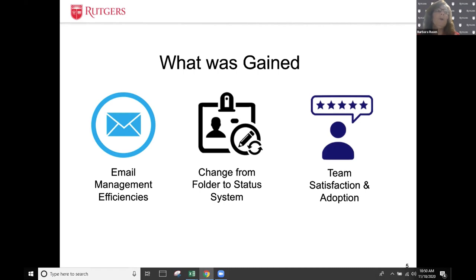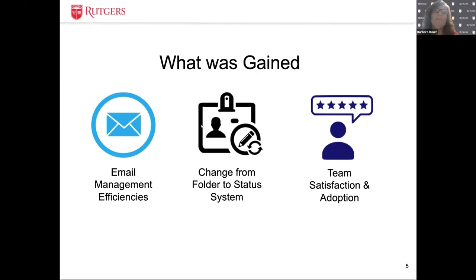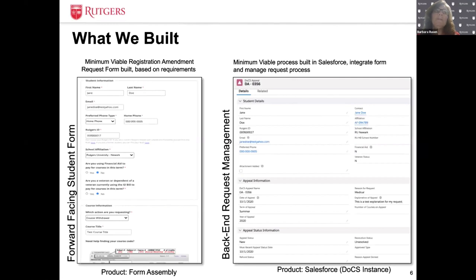After the application went live, our collaborative approach carried over into a change request model, and the development team remains very hands-on. Here are two screenshots — on the left is the student-facing form, and on the right is the back-end in Salesforce where our summer session staff manages the process. This process allows all of the data being collected on the forward-facing form to be streamlined and tracked in Salesforce, which includes workflow automations. An example of an automation is that a staff member will receive an alert when an end user — the student — uploads a new document. This automation functionality expedites our response time and reduces staff work, all while increasing the student experience.